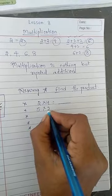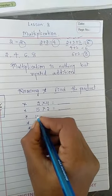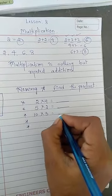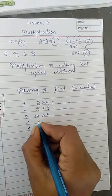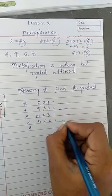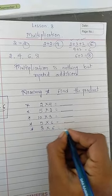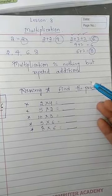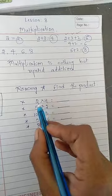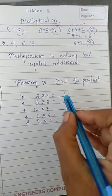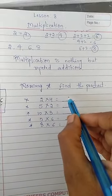For example 2×4 is equals to dash. 5×2 is equals to dash. 10×3 is equals to dash. 5×6 is equals to dash. Or else 8×6 is equals to dash. This you have to complete. Find the product means after doing multiplication of these two what answer you are getting that you have to write here.